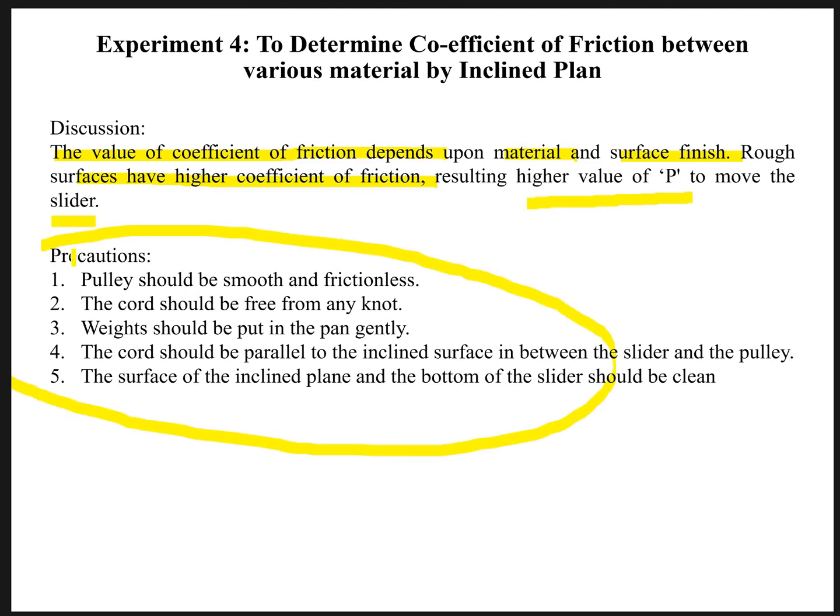These are some precautions you should keep in mind and should take care of. Number one says the pulleys should be smooth and frictionless. Number two says the cord should be free from any knots. Number three, weights should be put in the pan gently. The cord should be parallel to the inclined surface in between the slider and the pulley. And the surface of the inclined plane and the bottom of the slider should be clean. You have to make sure the surfaces are clean.